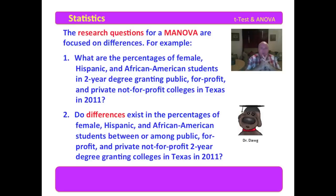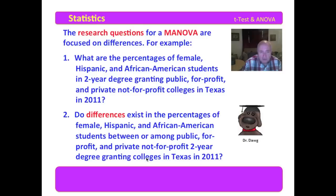Here is the real MANOVA research question: Do differences exist in the percentages of female, Hispanic, and African American students between or among public, for-profit, and private not-for-profit two-year degree-granting colleges in Texas? Notice that I said 'between or among' — if there had been just two groups I would have said 'between,' but there are actually three groups, so I say 'between or among.' The question focuses on whether differences exist in the dependent variables between or among the grouping variables, in Texas in 2011.